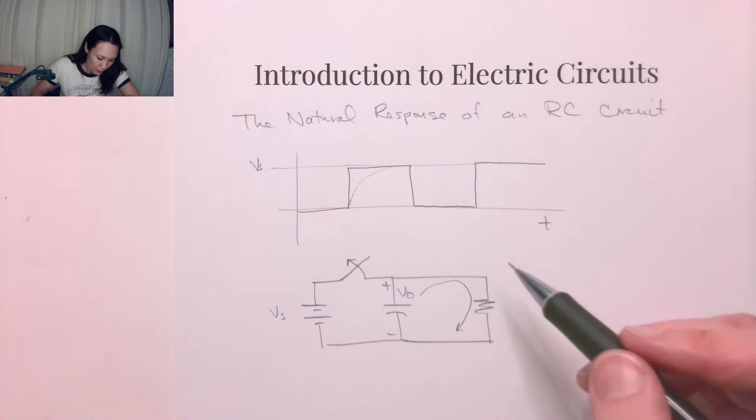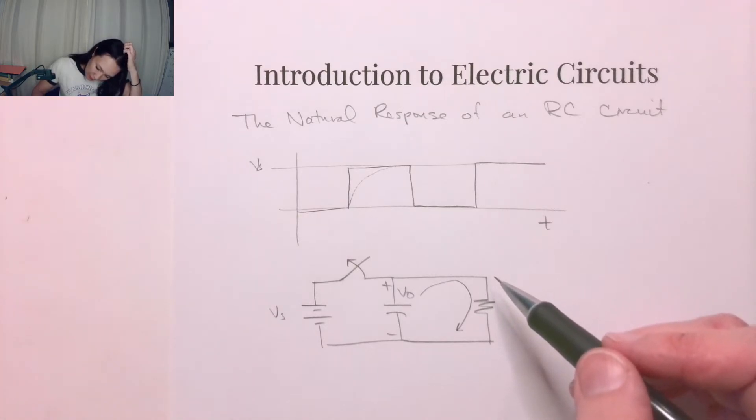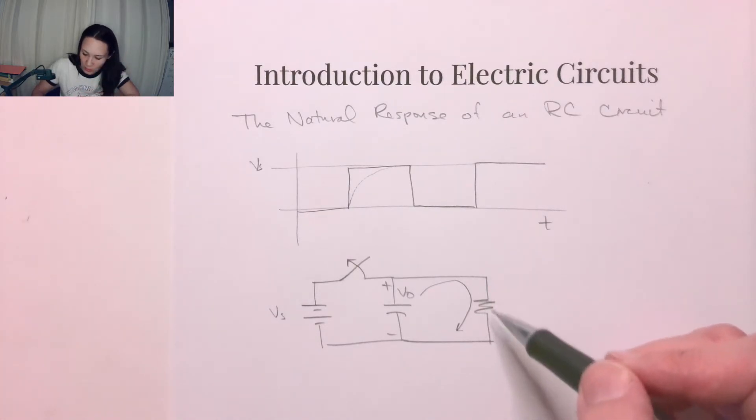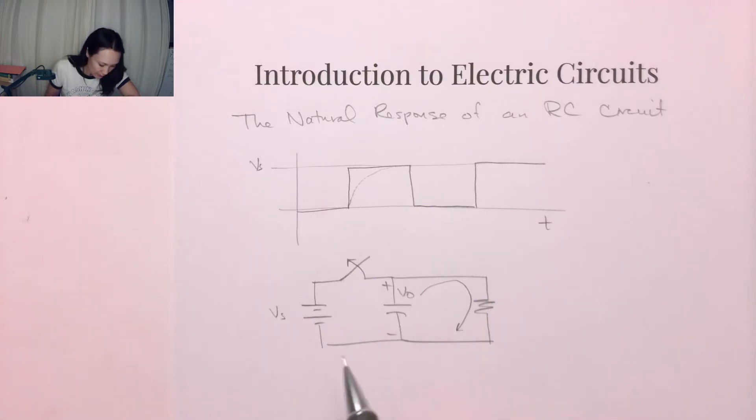If you take a voltmeter and measure the voltage across this resistor in parallel with the capacitor, you'd find this would be a decaying exponential: V₀ e^(-t/RC).